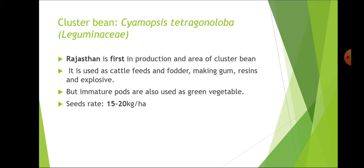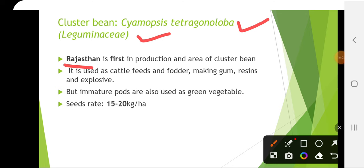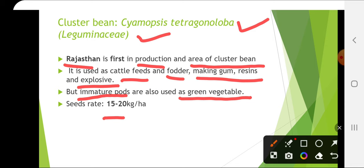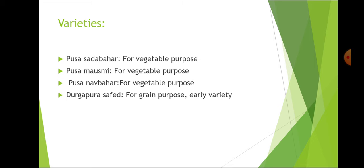Cluster bean is Cyamopsis tetragonoloba, family Leguminaceae. Rajasthan is first in production and area of cluster bean. It is used as cattle feed, fodder, for making gums, resins and explosives. Immature pods are used as a green vegetable. Seed rate is 15 to 20 kg per hectare. Varieties: Pusa Sada Bahar, Pusa Mausmi and Pusa Nav Bahar for vegetable purpose, and Durgapur Safed for grain purpose and as an early variety.